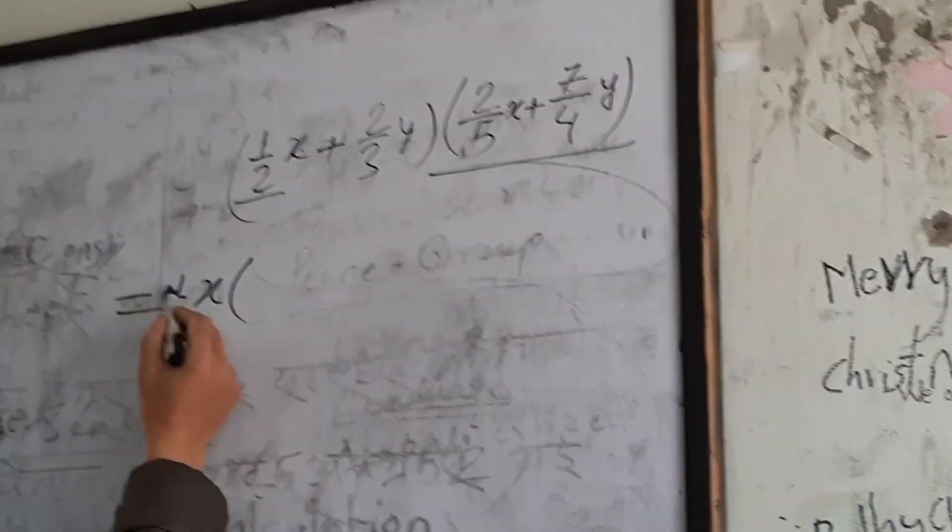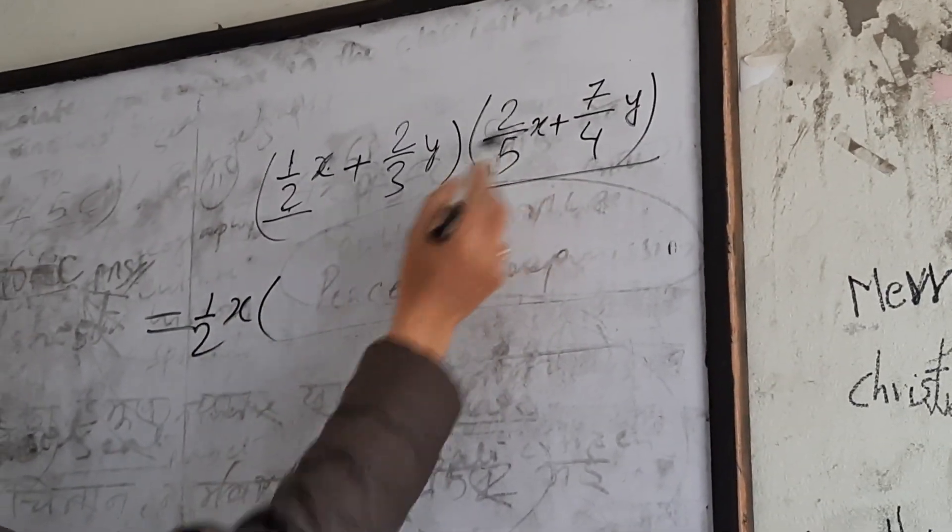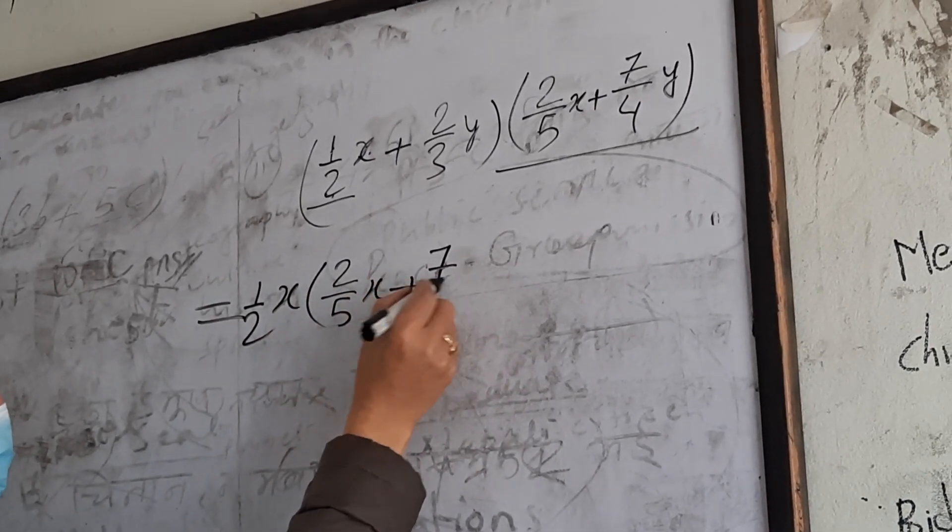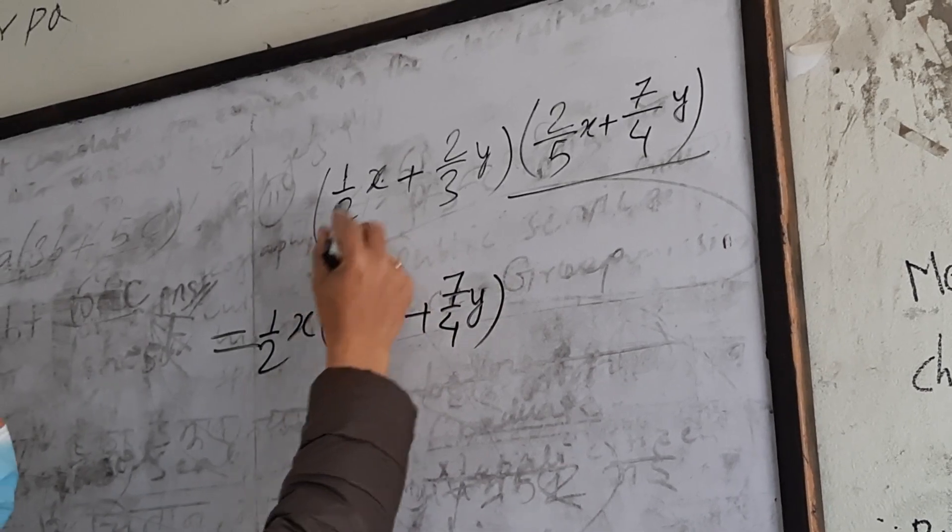1 by 2 x, 2 by 5 x, 2 by 5 x plus 7 by 4 y. This is the same.